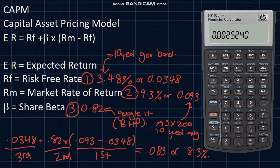So what can we do with this 8.3%? Essentially, we can take this expected return and compare it to the actual return of the stock. If the actual return is greater than the expected return, that means that the stock is undervalued.